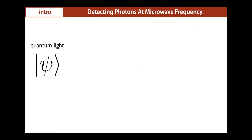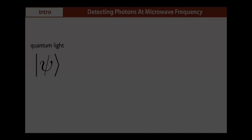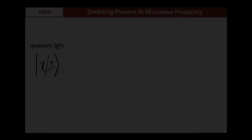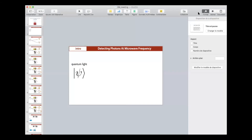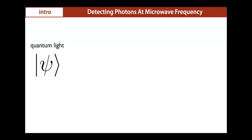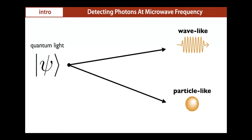Let's talk at a very basic level of microwave quantum optics. Quantum light can be described by a wave function, which will behave either as a wave or as a particle depending on the instrument you use to probe it. So the choice of observable will exhibit either wave-like behavior or particle-like behavior. There's a large class of available detectors at microwave and optical frequencies.